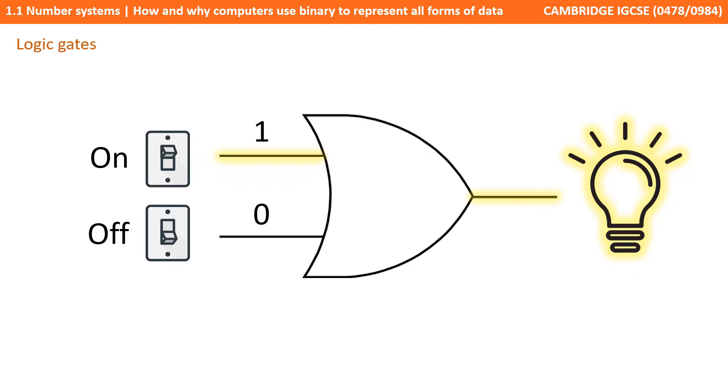in simple terms a computer is made up of nothing more than millions and millions of tiny switches. These switches must be in either an on or off position, and therefore of course they can be represented easily by binary. A switch is either in the on position, which we can represent by a 1, or an off position, which we can represent by a 0.